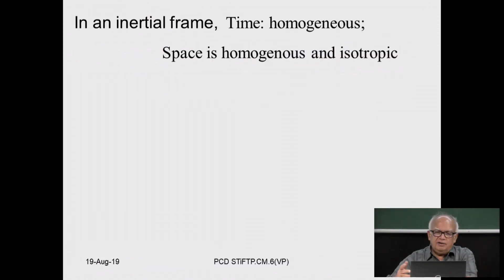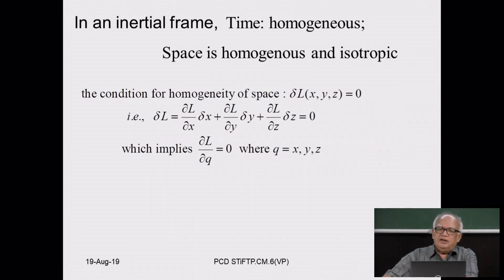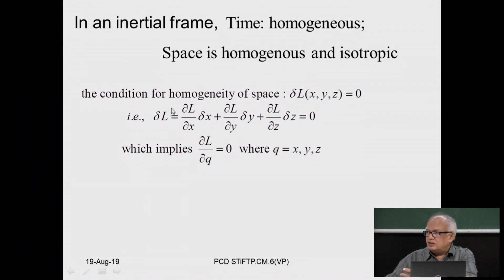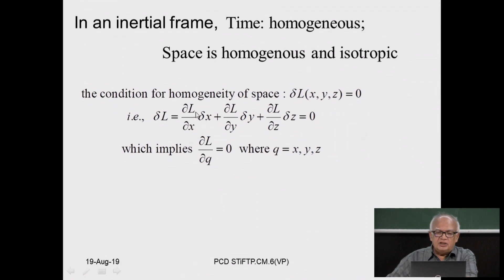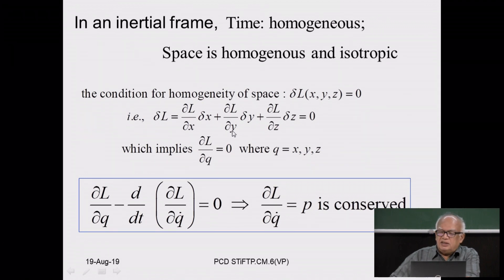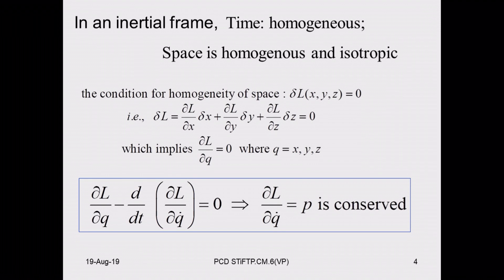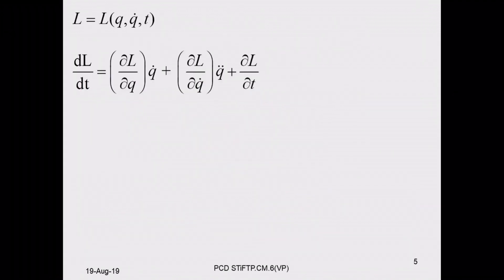In an inertial frame in homogeneous space, a change in coordinates by δx, δy, δz leaves the Lagrangian invariant. For this to hold for arbitrary displacements, the coefficients — the partial derivatives ∂L/∂x and ∂L/∂y — must individually be zero. This is the statement connecting symmetry and conservation laws, which is the content of Noether's theorem.